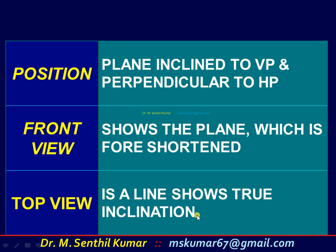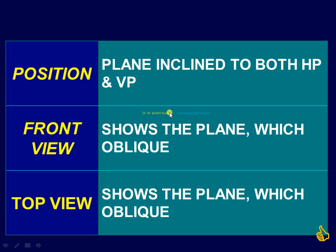Finally, the tabular column for the oblique plane — the plane inclined to both HP and VP. In this case, the front view shows a plane which is oblique, and the top view also shows a plane which is oblique. We will solve problems covering all the possibilities shown here. Thank you.